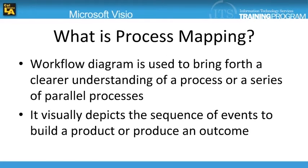So what is process mapping? Process mapping is a workflow diagram used to bring forth a clear understanding of a process or a series of parallel processes. A process map is also called a cross-functional flowchart or deployment chart. It visually depicts the sequence of events to build a product or produce an outcome.